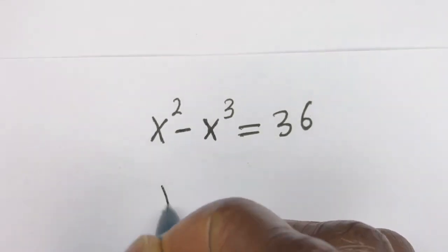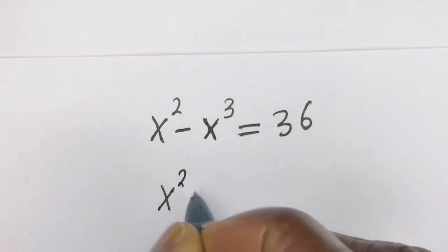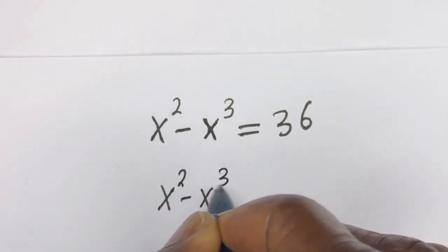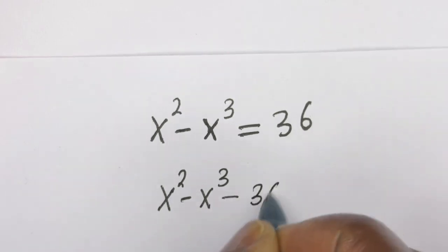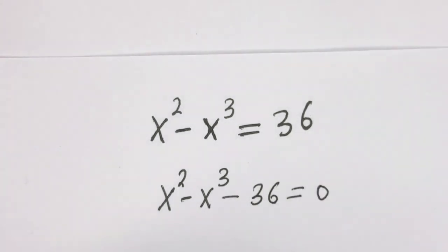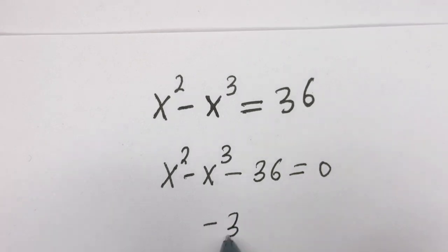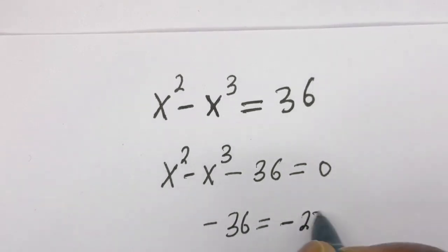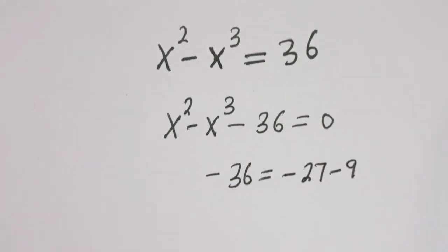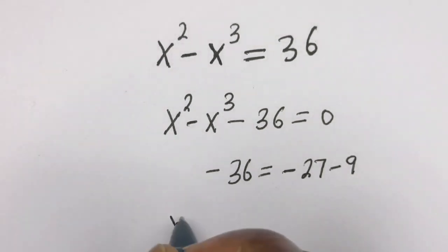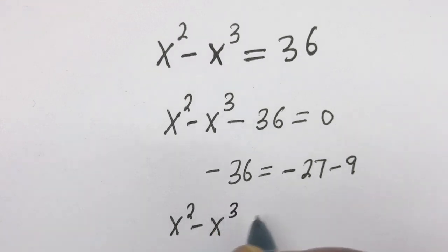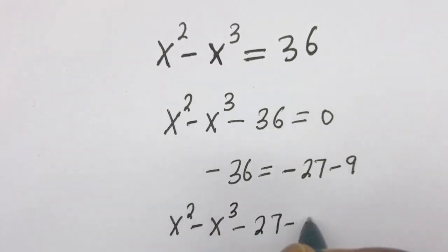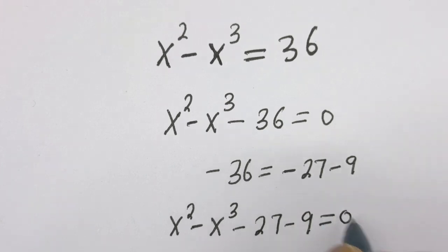We have s squared minus s to the power of 3. If you bring this 36 to this side, you get minus 36 is equal to 0. Then, minus 36 is equal to minus 27 minus 9. So we have s squared minus s to the power of 3 minus 27 minus 9 is equal to 0.